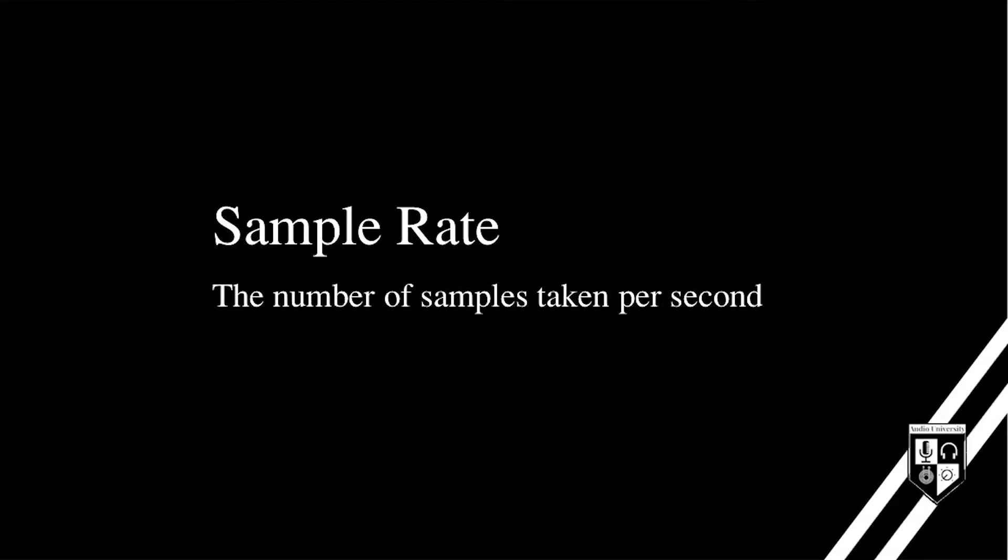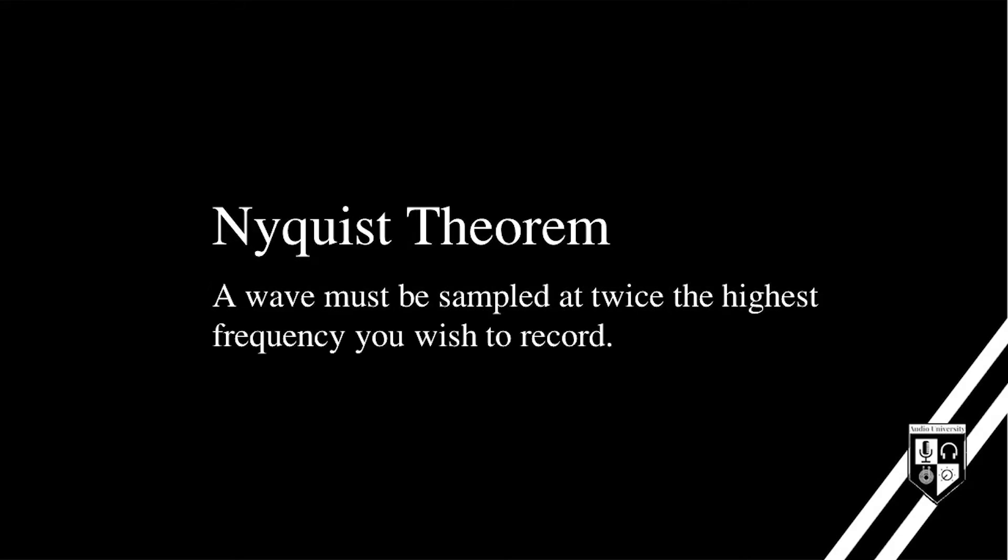Sample rate determines the number of samples taken per second. The Nyquist theorem states that you must sample a wave at twice the frequency of the highest frequency you wish to record. So if we want to record 20 kilohertz — the highest frequency humans can hear — we need to sample the wave at at least 40 kilohertz. That's why 44.1 kilohertz is the standard for CD quality audio, and many studios record at a sample rate of 96 kilohertz and higher.